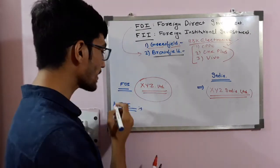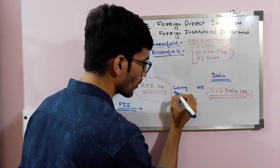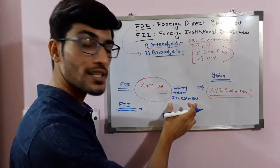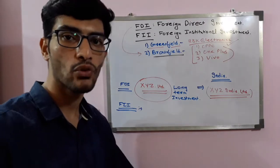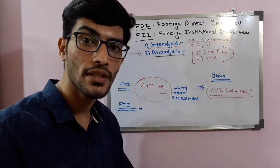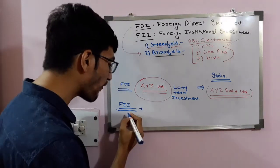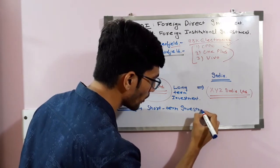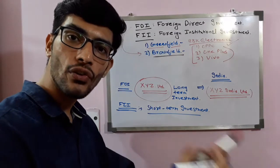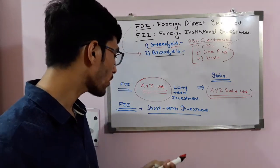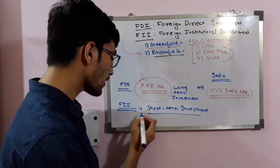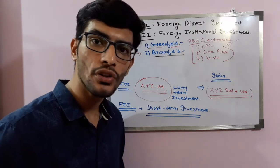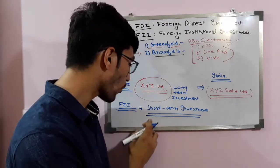We can say that FDI is a long-term investment, because you have to purchase land, build an industry, and hire employees to start a business. But FII is a short-term investment because anytime we can withdraw our money from the share market — there is no liability. We bring money, invest in the share market, and can withdraw it whenever we want.